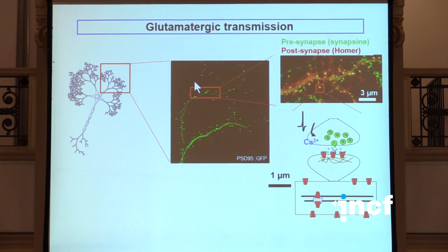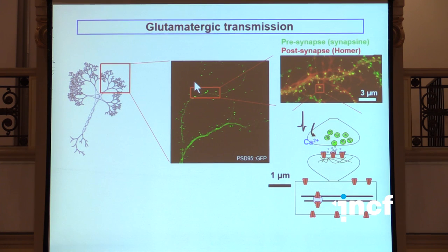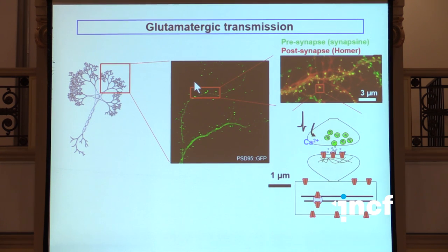Our object of interest are excitatory glutamatergic synapses. I'm sure you all know that those mostly occur on the small protrusions that are called spines, they are pretty small and that's the main reason for using super-resolution imaging methods to look at their organisation. Those synapses are really at the base of brain function. And of course understanding how they work is extremely important to understand human behaviour, memory, learning and also many neurodegenerative diseases and brain pathologies.